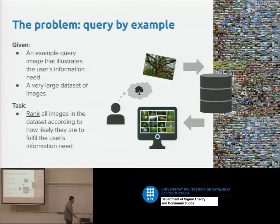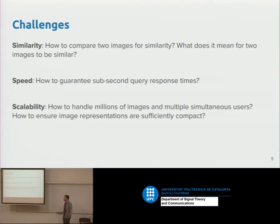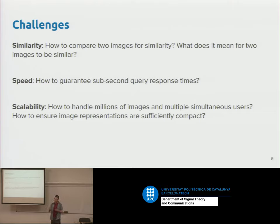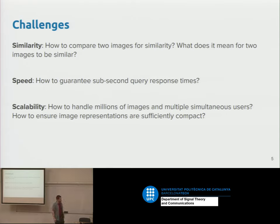Why is this hard? There are several challenges. The first is similarity: how do you compare two images to say they're similar? If we had a function that takes two images and outputs a similarity score, we could apply it to everything in our dataset and sort by score. But it's not obvious how to define similarity between two images.